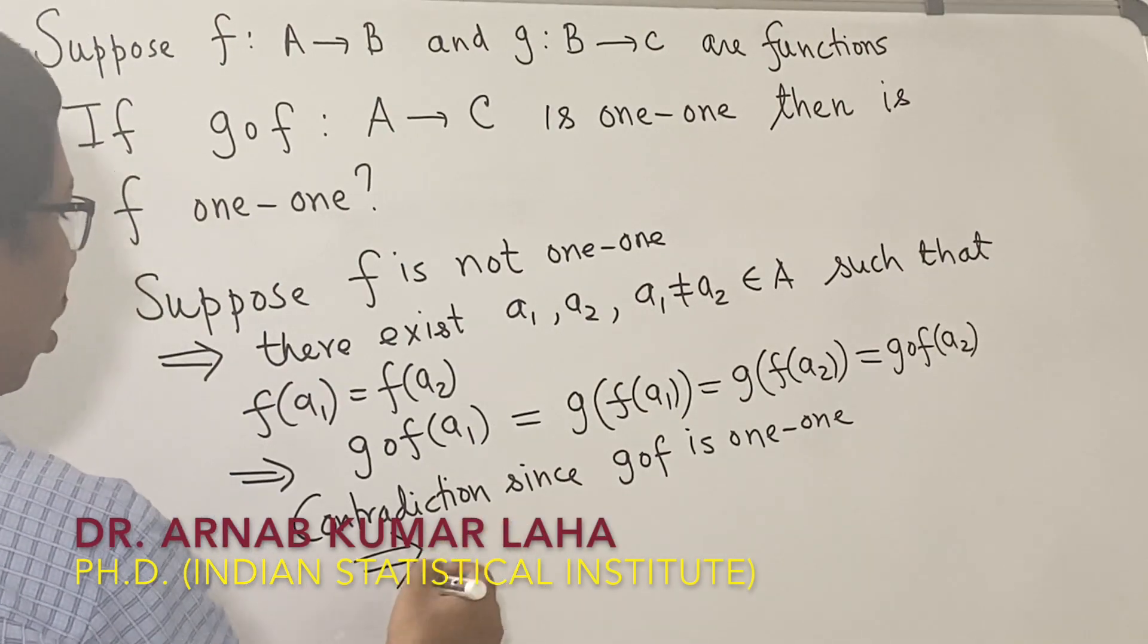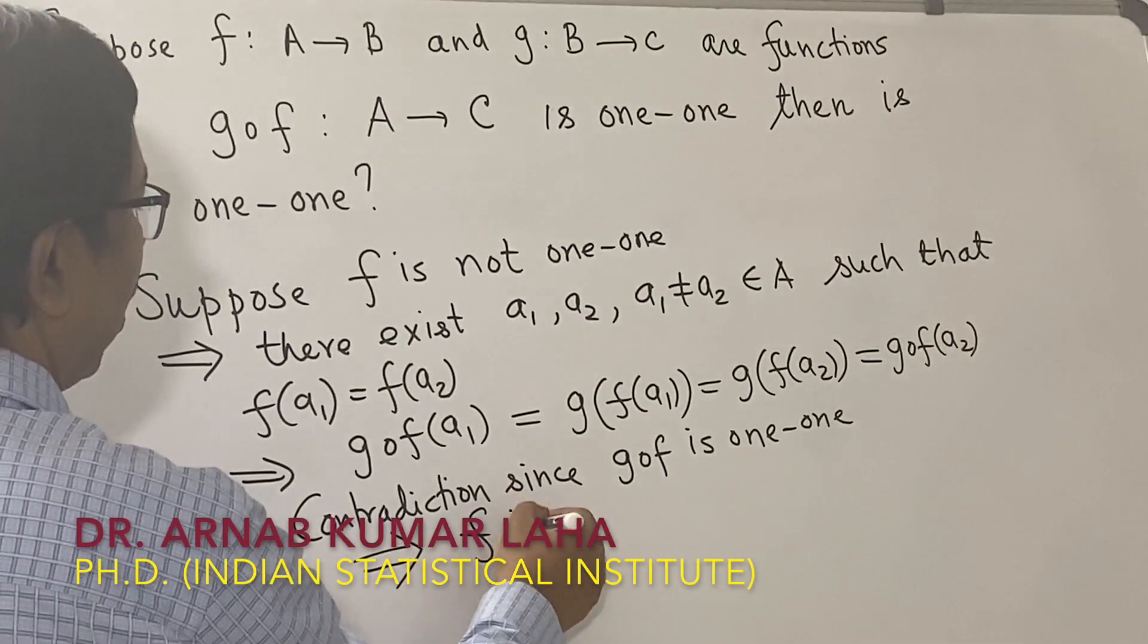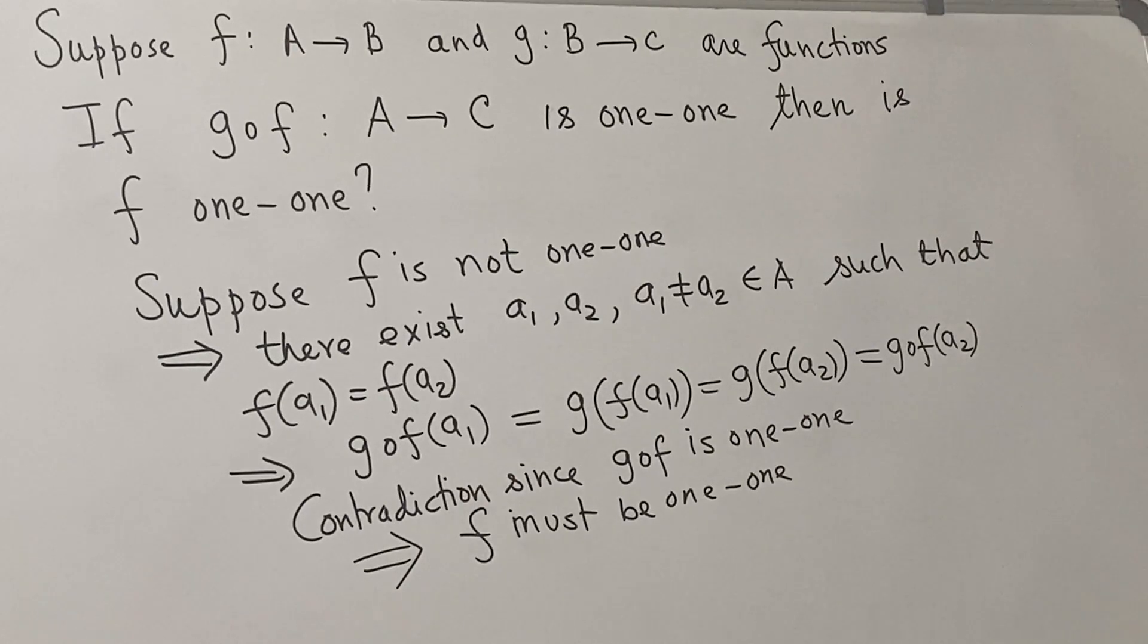Therefore, you can conclude that f must be one-to-one. So if g∘f is one-to-one, then f must be one-to-one. Thank you.